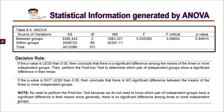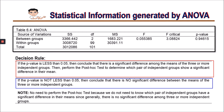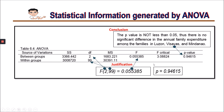We follow a decision rule: if the p-value is less than 0.05, conclude that there is a significant difference among the means of the three or more independent groups, then perform the post-hoc test to determine which pair of groups shows a significant difference. However, if the p-value is not less than 0.05, conclude that there is no significant difference. In our example, the p-value is 0.94615, which is not less than 0.05.